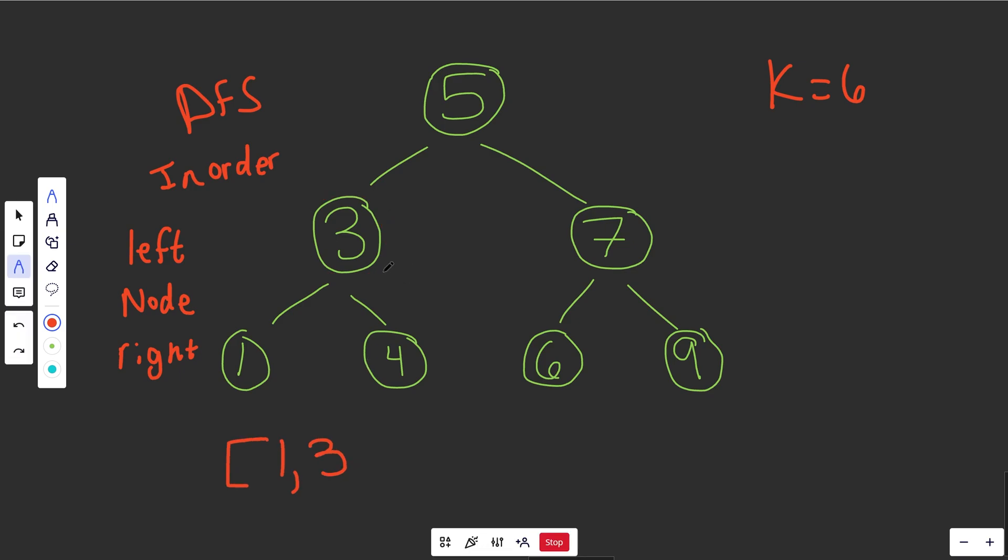Okay, so the 3 has been processed. He'll go to his right side now. We're at a 4. He does its left. That's nothing. Then he processes itself, so that's going to have 4. And then he processes right. That's nothing. We return back over here. We return back over here. Okay, the 5 has already done its left, so now it's ready to do itself. Notice that is the fourth element that is biggest in the list. So we see the value of 5, and we are then going to go to the right side.